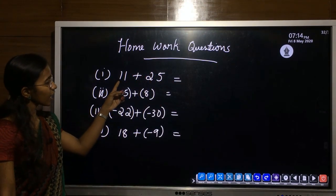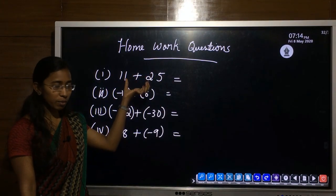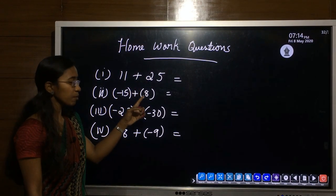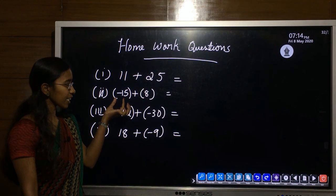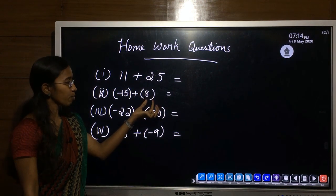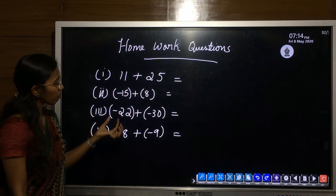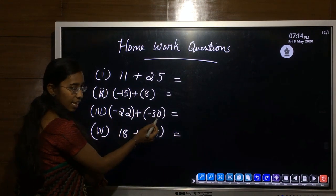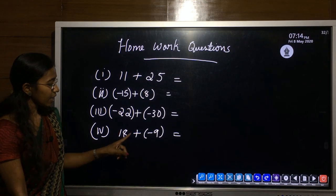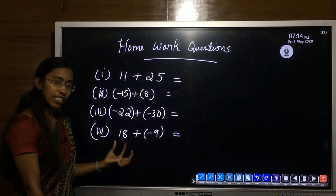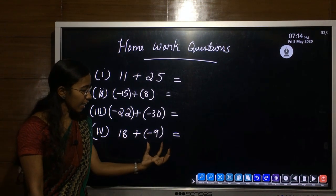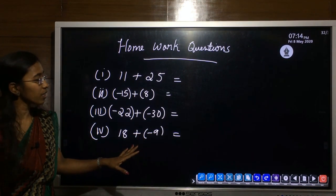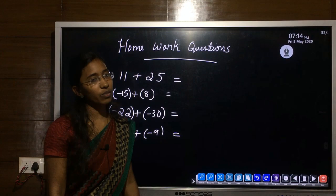There are four practice questions. First: 11 plus 25 — both numbers are positive. Second: minus 15 plus 8 — first number is negative, second is positive. Third: minus 22 plus minus 30 — both numbers are negative. Fourth: 18 plus minus 9 — first number is positive, second is negative. Just try to do these as homework questions.